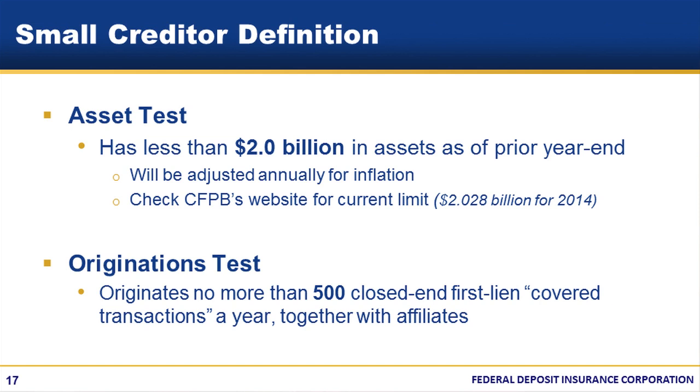You'll notice we said that QMs made by small creditors have a higher safe harbor threshold than other first lien QMs. What do we mean by small creditor? To qualify as a small creditor, you must meet both an asset test and an originations test. Most FDIC supervised institutions meet these asset and originations tests, so the special small creditor QMs may be an important option for many of you.